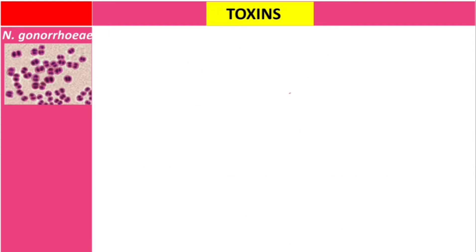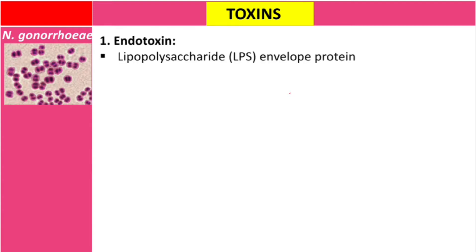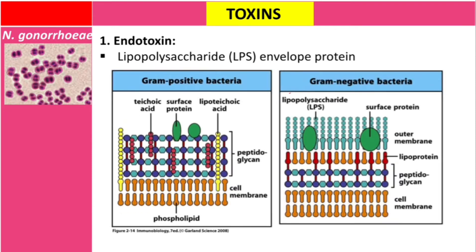Let's talk about toxins. Like other Gram-negative bacteria, there is a lipopolysaccharide on the envelope — this is the endotoxin. You can see the lipopolysaccharide in the light green region on the diagram of the Gram-negative cell wall. Neisseria gonorrhoeae does not produce exotoxin — only endotoxin.